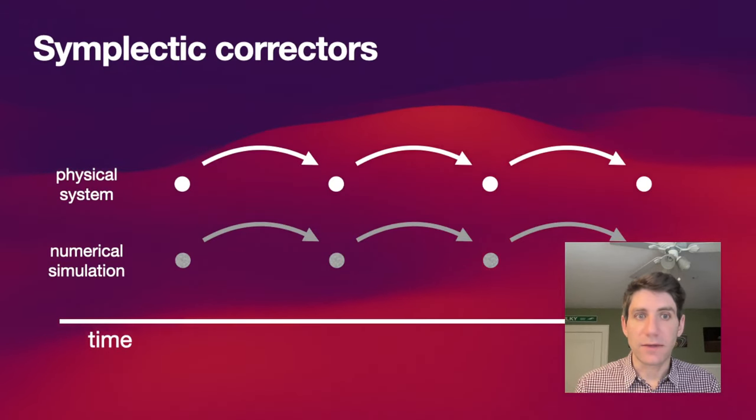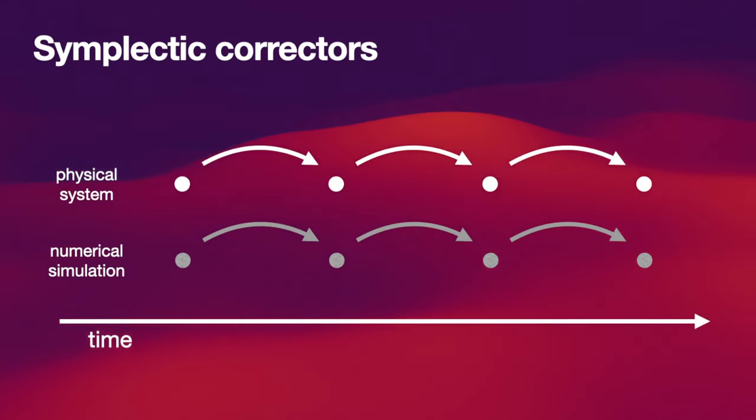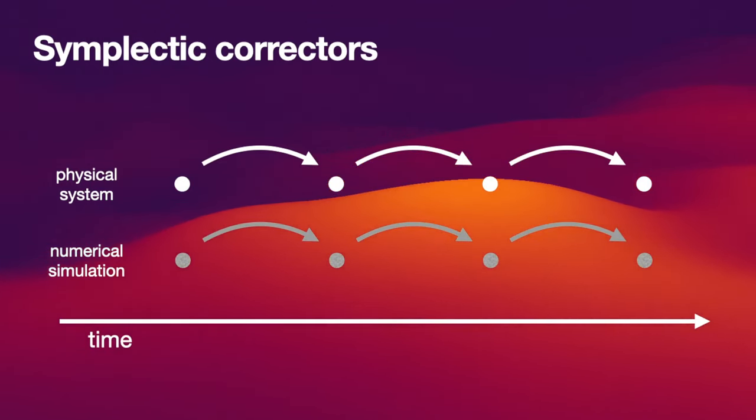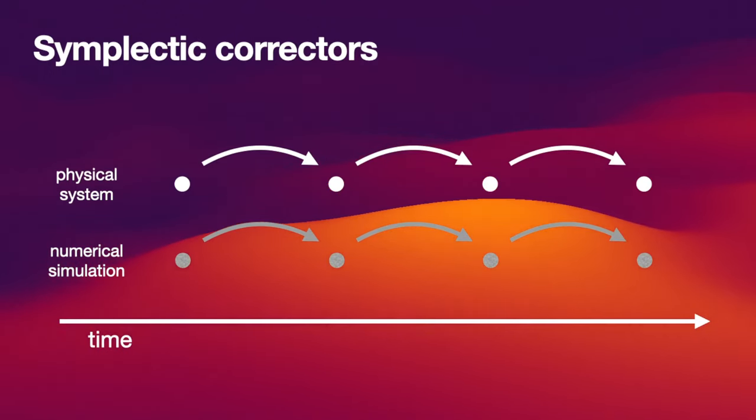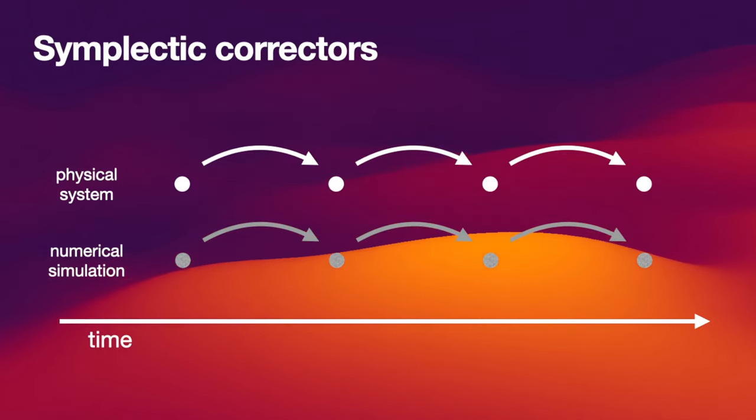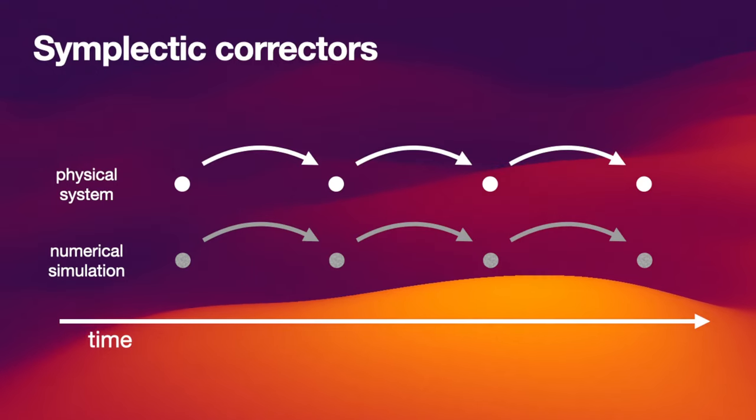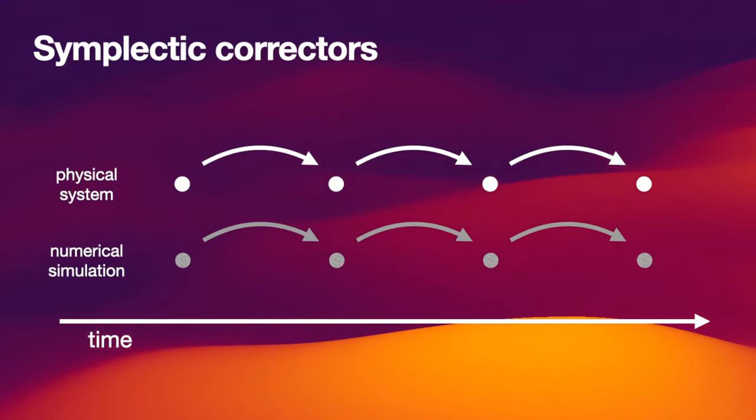So let's start with the symplectic correctors. When we're integrating a physical system forward in time, we're not really integrating the exact physical system. We're integrating some slightly perturbed system. Let's call it a numerical system or our numerical simulation. Although we start from the same initial conditions at each integration step that we move our initial conditions forward to the next time step, we solve a slightly different system.